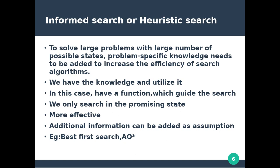We need to use the knowledge and utilize it to find the solution. We have a function which guides the search. In this case, we only search the promising paths. In uninformed search we traverse the whole tree, but in informed search we only search the promising paths.